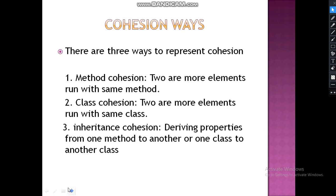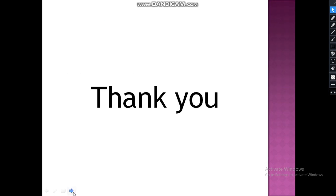There are three ways to represent cohesion: method cohesion, class cohesion, and inheritance cohesion. Method cohesion is when two or more elements run with the same method. Class cohesion is when two or more elements run with the same class. Inheritance cohesion means deriving properties from one method or class to another. Thank you.